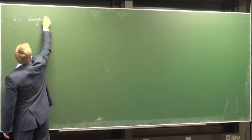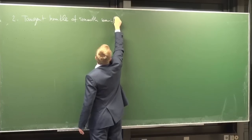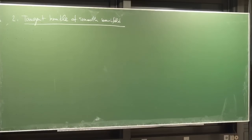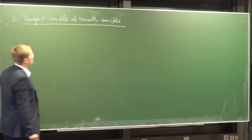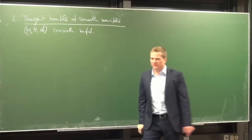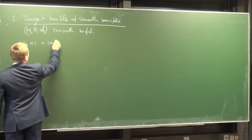Now let's be precise. Second: the tangent bundle of a smooth manifold. We need this because we want to understand vector fields, and these are sections of the tangent bundle. We'll do this construction in detail — it's fantastic practice of all the concepts we have. Let M be a smooth manifold, which is going to be the base space. First, as a set only, we define TM — the tangent bundle — as the disjoint union of all the tangent spaces T_pM over all points p in M.